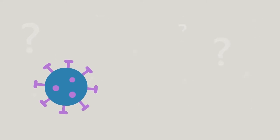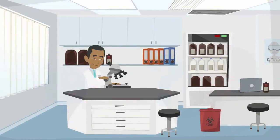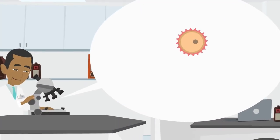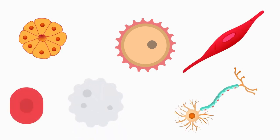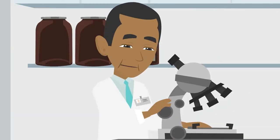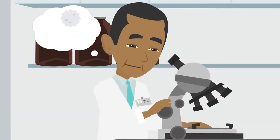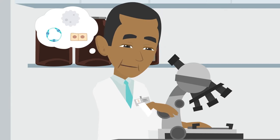So, how does the coronavirus harm us? Our body is made up of 30 trillion tiny building blocks called cells that come in many different shapes and sizes. There are infection-fighting or immune cells, skin cells and lung cells, to name a few.